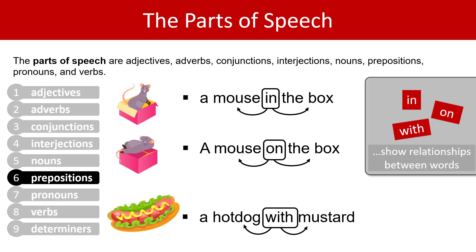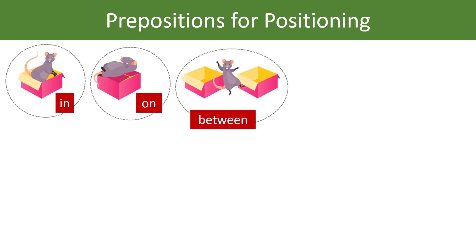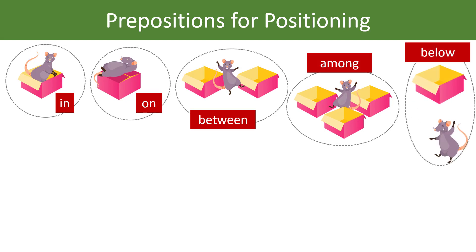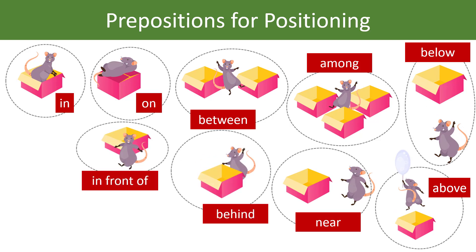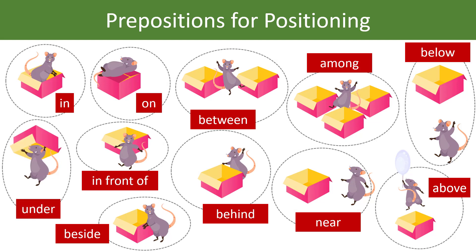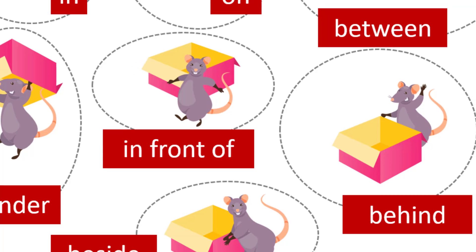Prepositions show relationships between words. Very often that relationship is about positioning, but sometimes it is about time. When you're first learning about prepositions, you might want to think of them as anywhere a mouse could go: in a box, on a box, between two boxes, among boxes, below a box, above a box, near a box, behind a box, in front of a box, beside a box, under a box. All of these words are prepositions. Notice that occasionally they're more than one word, like 'in front of'.